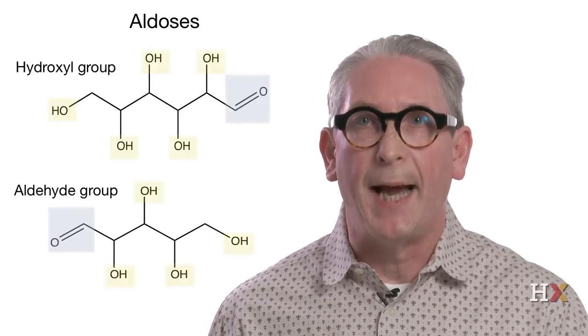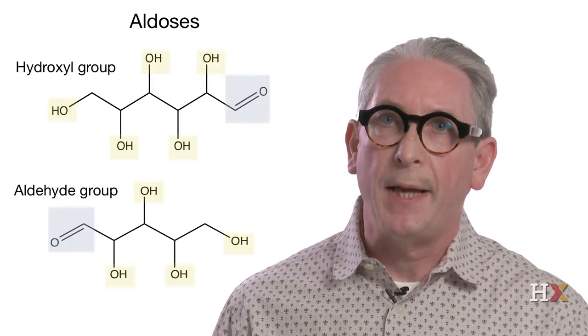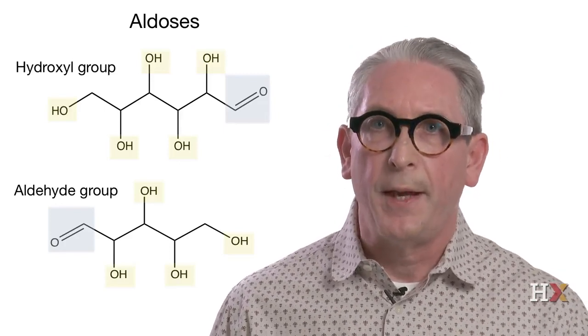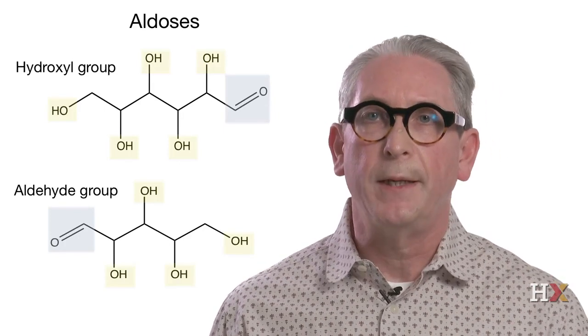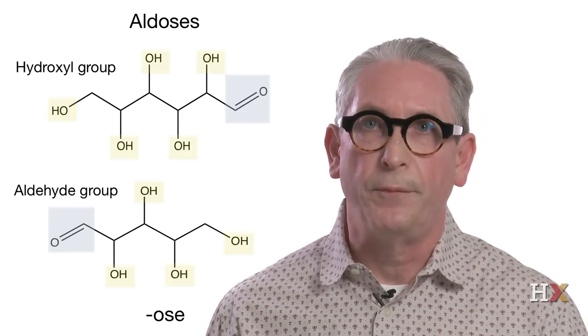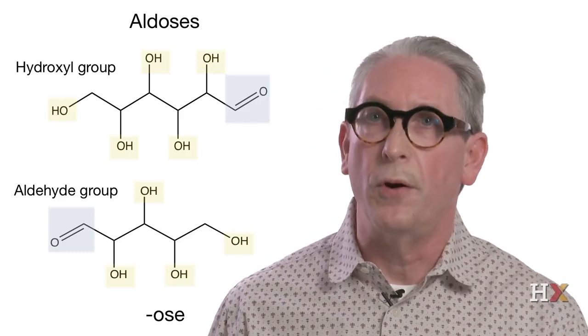Monosaccharides also contain a carbonyl group and several alcohol functions. When the carbonyl group is at the end of the molecule, it becomes an aldehyde, and the monosaccharide is called an aldose. Usually the name of this monosaccharide ends in "-ose" — for example, glucose.